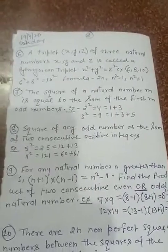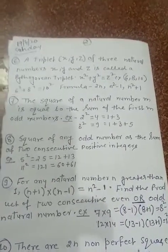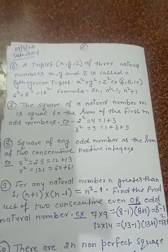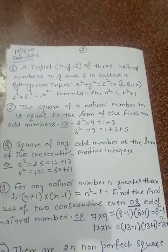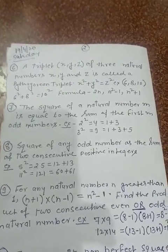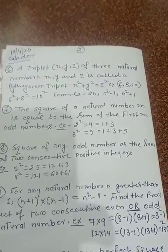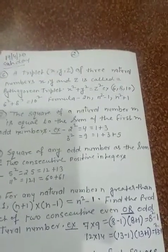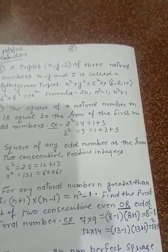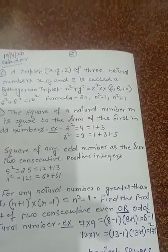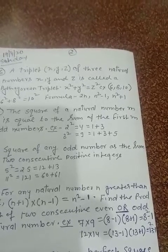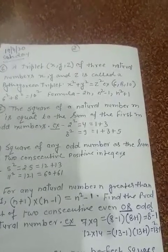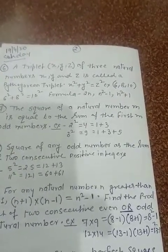Now, property number 7. The square of a natural number m is equal to the sum of the first m odd numbers. For example, we take the natural number 2. Square of 2, that is 4. We take the sum of the odd numbers 1 and 3, the first 2 odd numbers: 1 and 3 is 4, and 2² is 4.